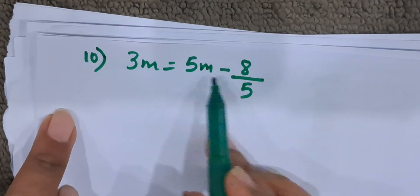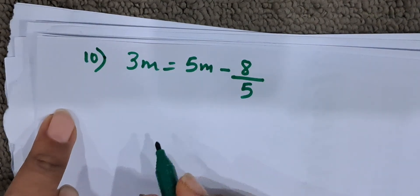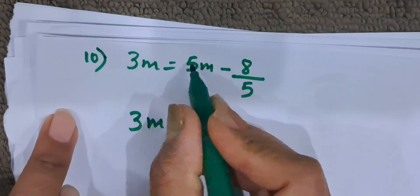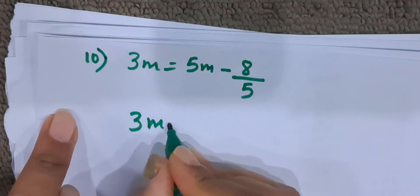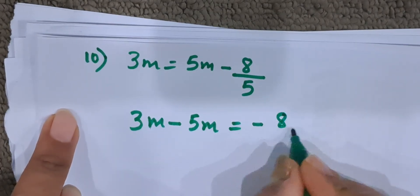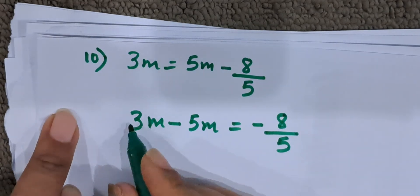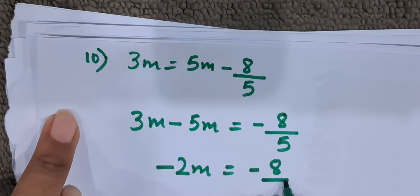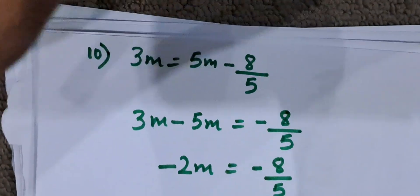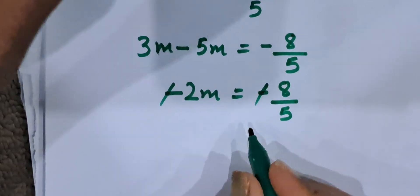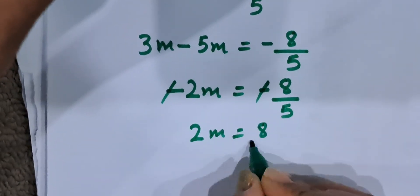Let us solve the 10th one. 3m is equal to 5m minus 8 by 5. We will take m terms on the left hand side. 3m minus 5m is equal to minus 8 by 5. 3m minus 5m is minus 2m. So, minus 2m is equal to minus 8 by 5. When both are negative, we can cancel minus and minus. So, 2m is equal to 8 by 5.